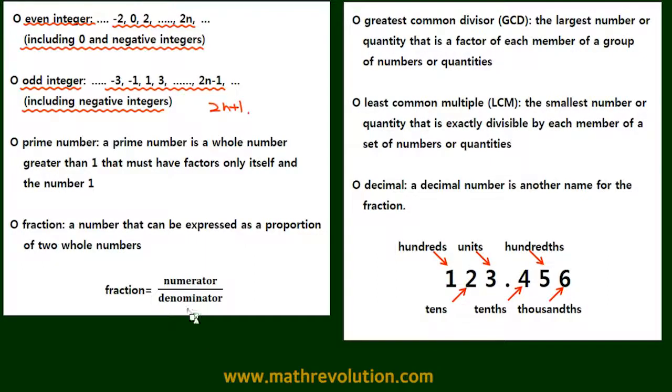All right, moving on to prime numbers. So a prime number is a whole number that is greater than 1 and has factors only itself and number 1.